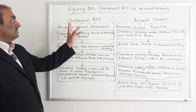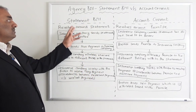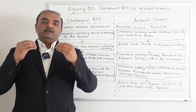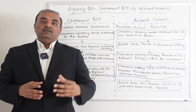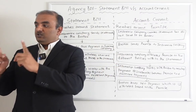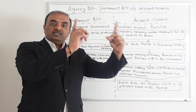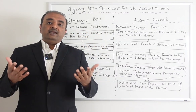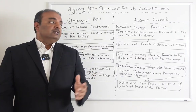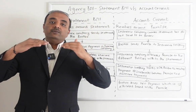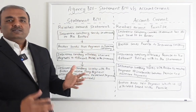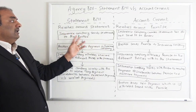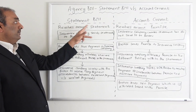Let's look at the steps for statement bill. Statement bill revolves around the statement — it is essentially an invoice. Unlike direct bill, which is a one-to-one mapping between an insurance company and one customer, statement bill covers invoices for multiple customers, because an agency can have 20 to 30 customers. Most of the time it's a monthly occurrence, so monthly the insurance company sends a statement to the broker. That's step number one in statement bill.